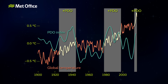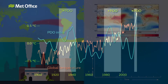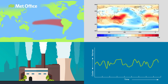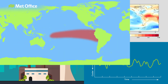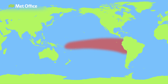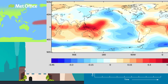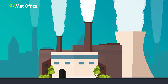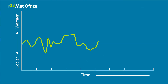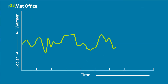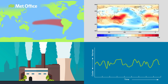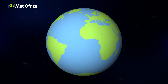Warm phases have the opposite effect. The cause of changes in the PDO may be due to a combination of factors, including long-lasting fingerprints of El Niño and La Niña events, changes in atmospheric pressure in the northern Pacific, the impact of industrial pollution and natural variability. This important phenomenon continues to be a subject of ongoing research.